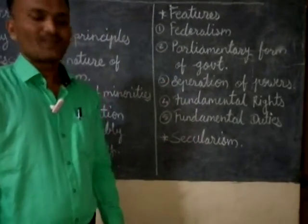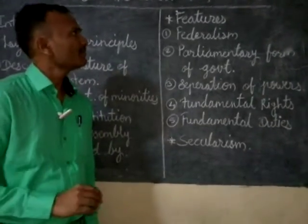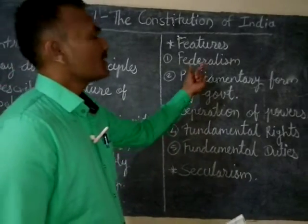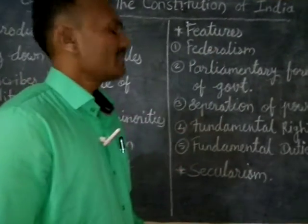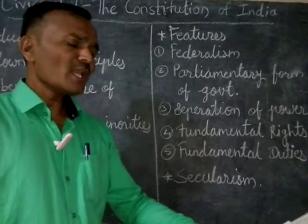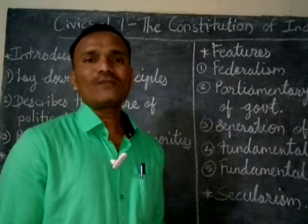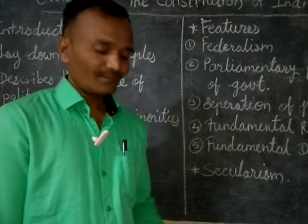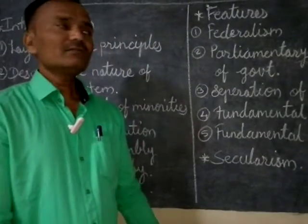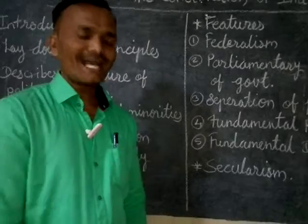We accepted the constitution on 26 January 1950, and our constitution is the biggest in the world. Among its features is federalism — two levels of government: central and state. Since India is a vast country, it is not possible for a single government to run the entire country. Some subjects are divided as the union list, state list, and concurrent list.